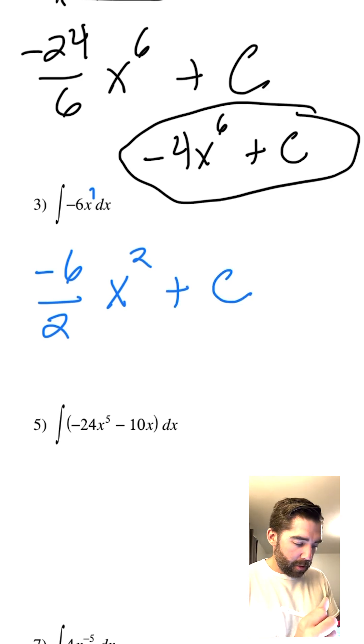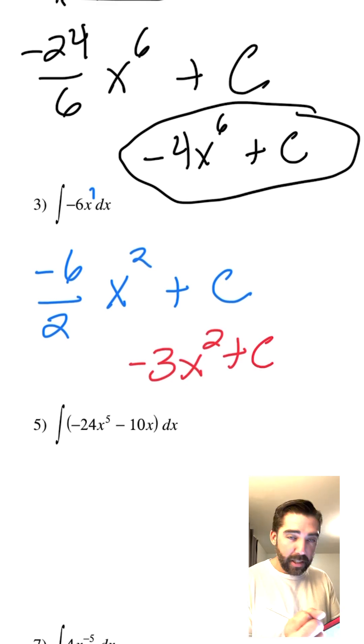We can simplify, so let's do it. Negative 6 divided by 2 is negative 3x squared plus c. You got time for one more? You got time for one more. Here it is.